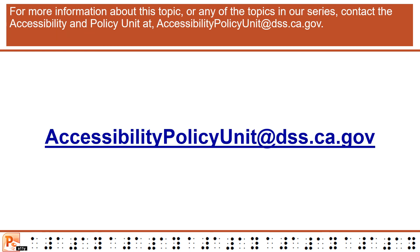For more information about this topic, or any of the topics in our series, contact the Accessibility and Policy Unit at accessibilitypolicyunit@dss.ca.gov.